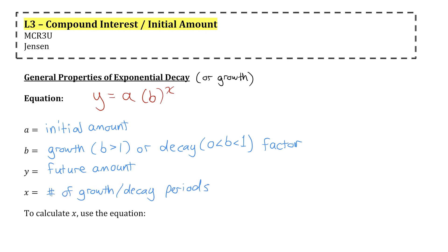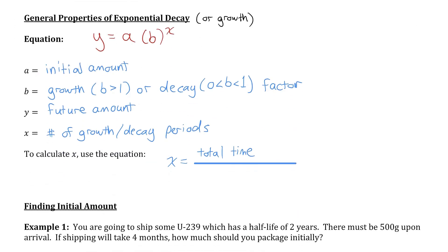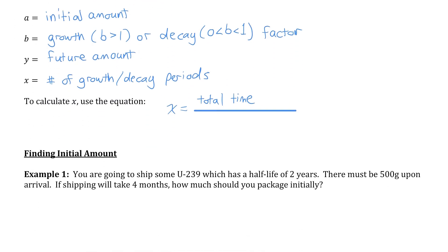x basically means how many times the initial amount is going to be multiplied by the base of the power. You can always calculate that by doing the total amount of time divided by the time of one growth or decay period.